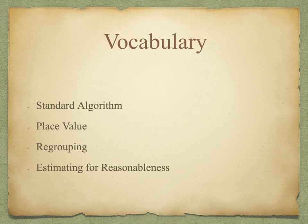And then finally, estimating for reasonableness. We talked about this in the video about 2 digit by 1 digit multiplication. Estimating is a really great strategy for us to use to see if our answer is reasonable or if it makes sense. So we'll be doing that on a few of the problems in this video.